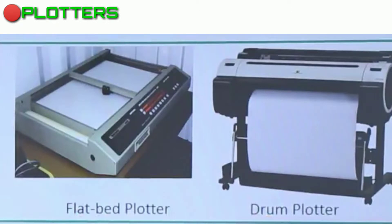There are two types of plotters: flatbed plotters and drum plotters. In a flatbed plotter, the paper is kept flat and a pen moves to draw images and pictures. In drum plotters, the paper slides around a cylindrical drum, and the pen moves over the drum to draw images and pictures.